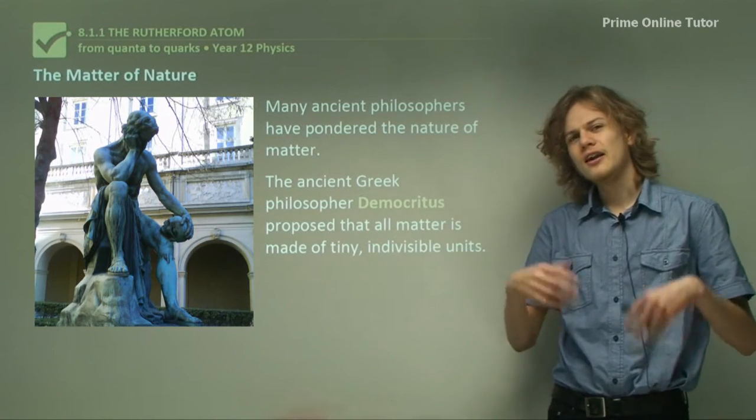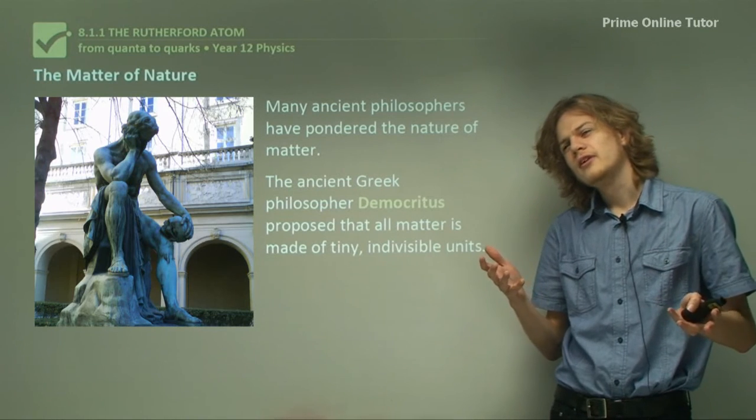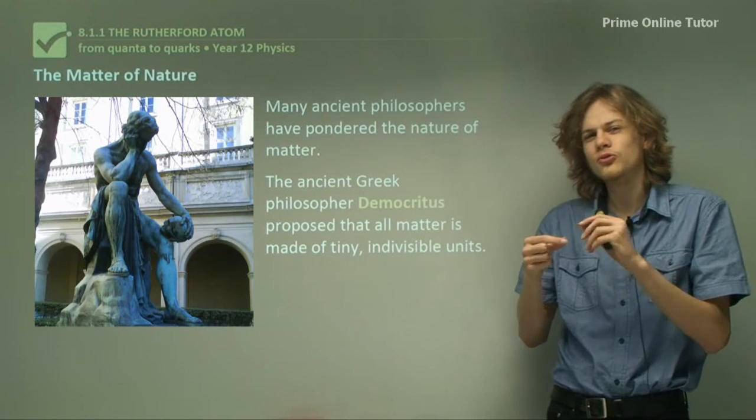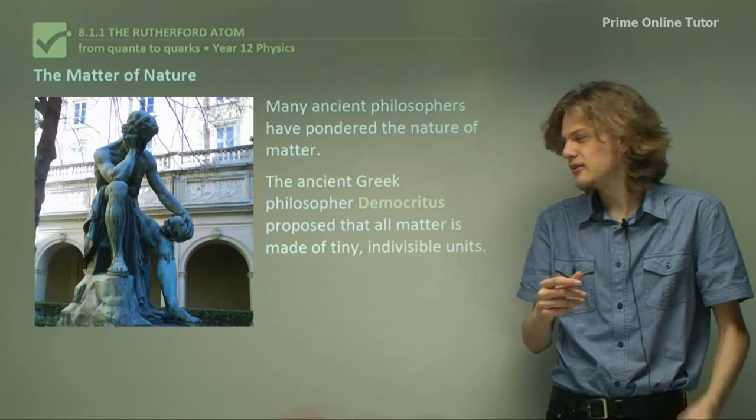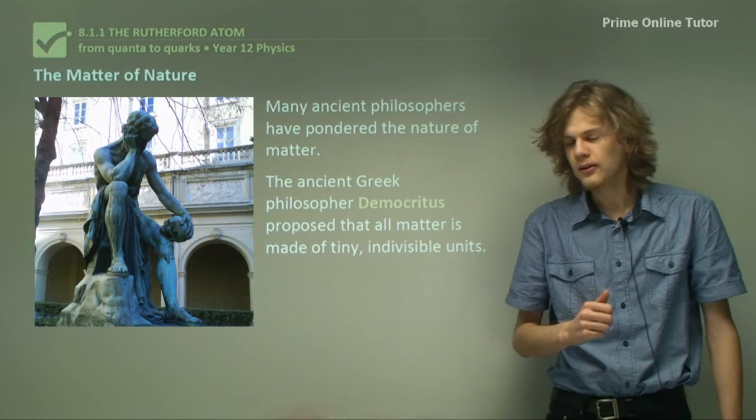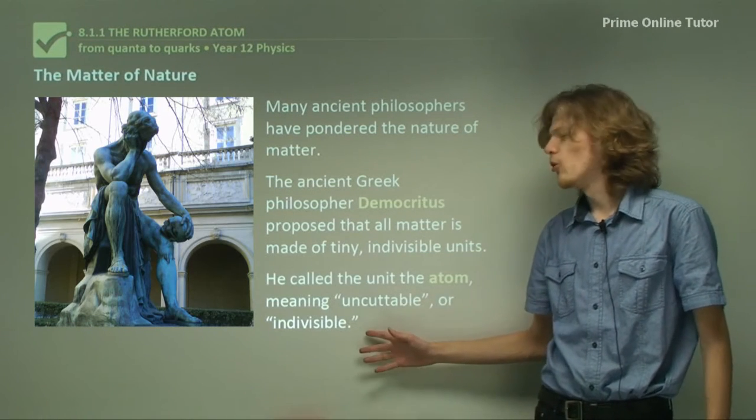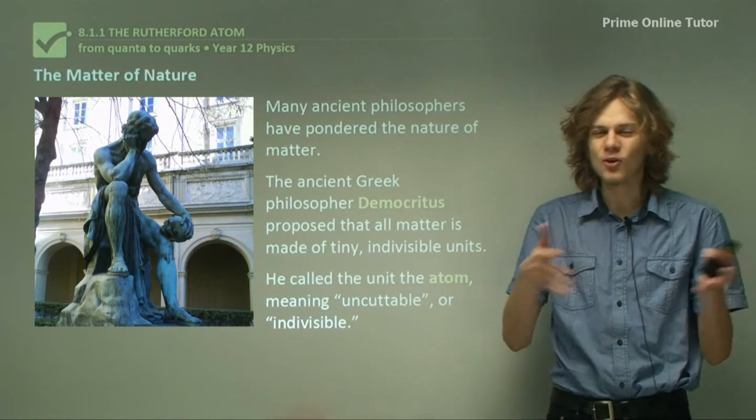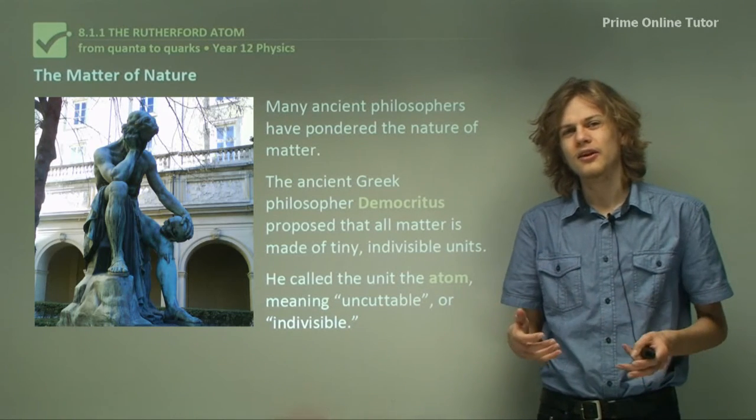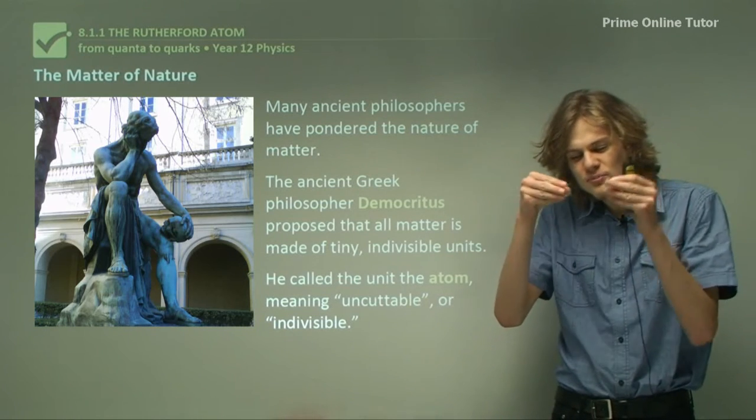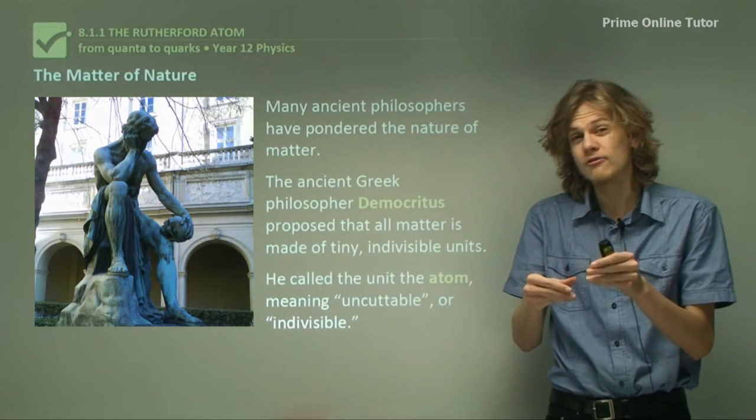He proposed that what if all matter was made out of these tiny little indivisible particles kind of like marbles but really, really tiny. And so what would you call something like that? Well, Democritus decided that he would call it the atom. Tom meaning cuttable and atom meaning uncuttable, which can also be translated as indivisible. And he supposed this is the smallest bit of matter it is possible to have.